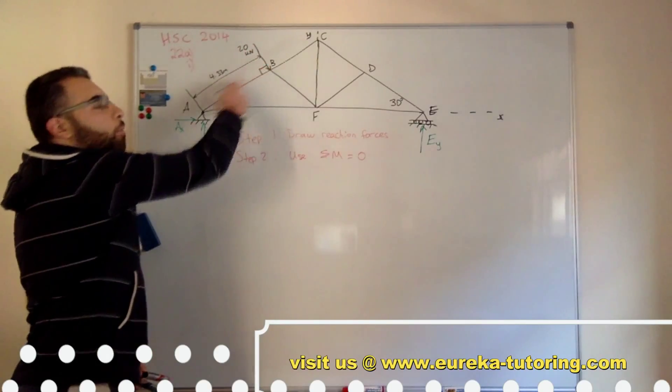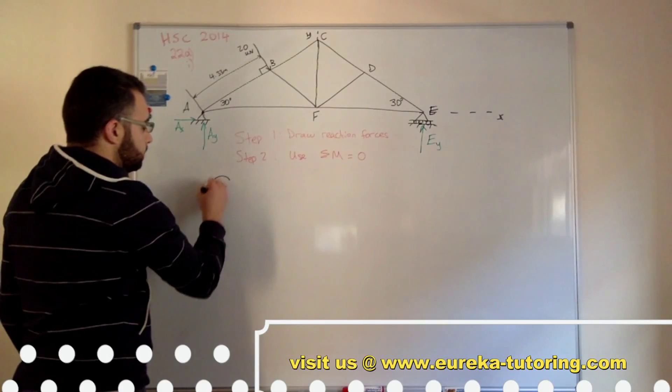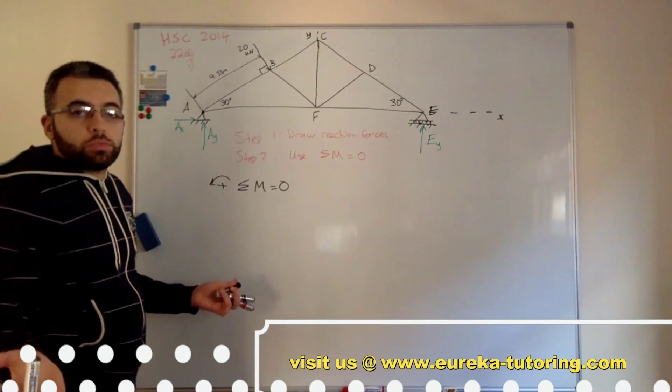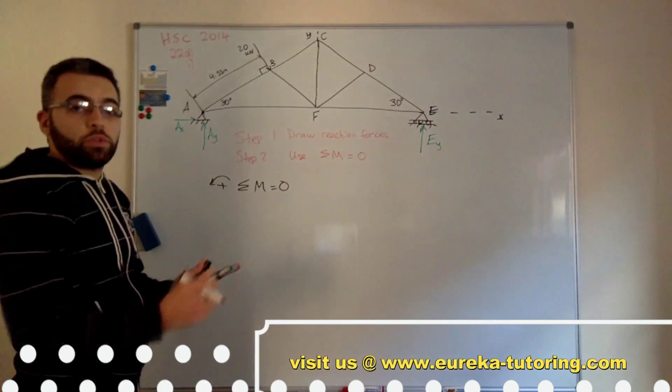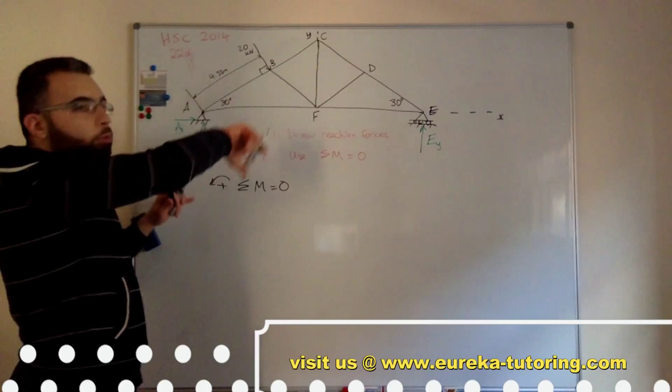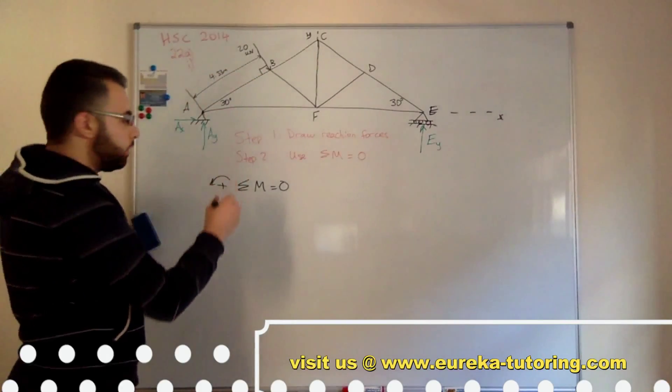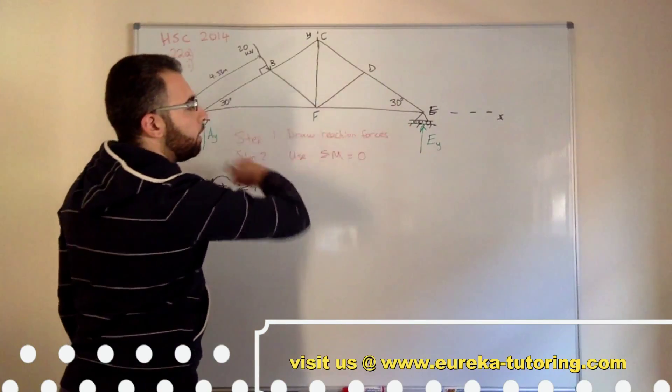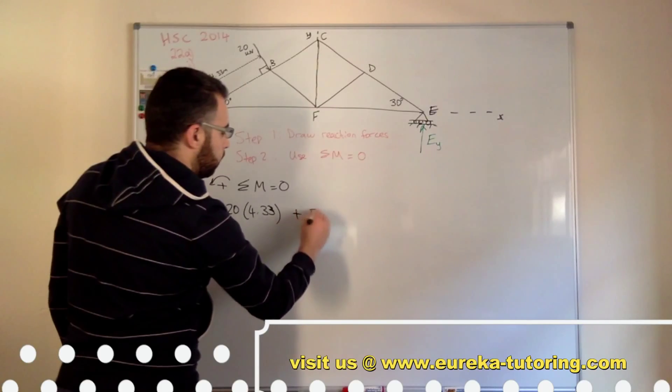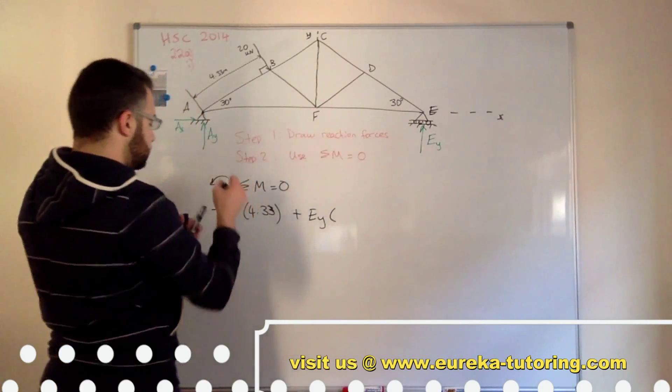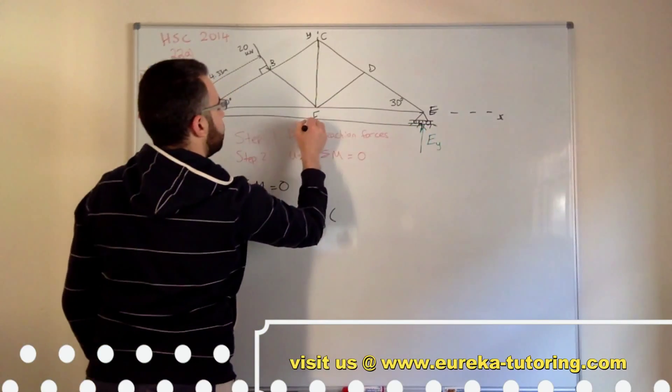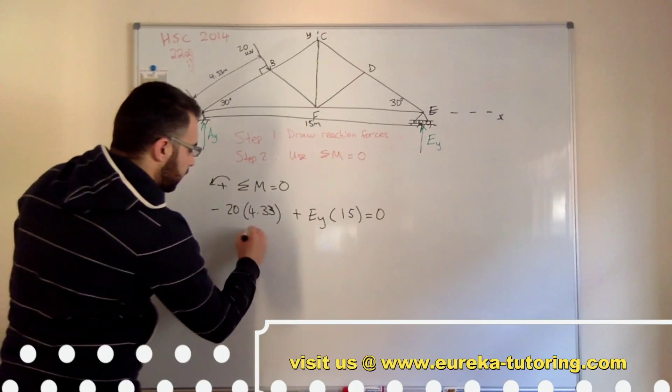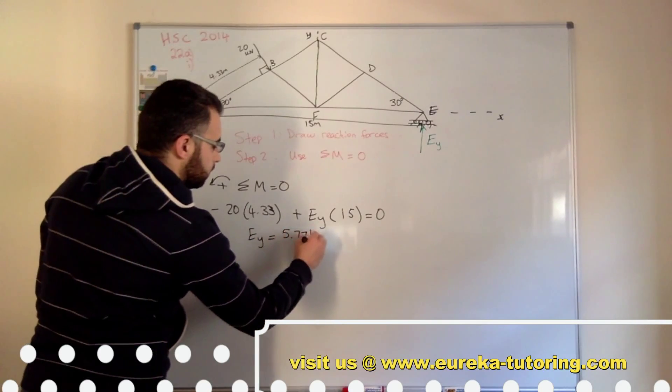So I know that this is the force, this is the perpendicular distance, so that will create a moment. Now I'm going to assume the moment to be positive in the anti-clockwise direction. It's up to what you assume it to be, it doesn't really matter, as long as you are consistent with your calculations. So this will create a moment about point A, going in the clockwise direction. So it will be negative 20 times 4.33. And E will create a moment anti-clockwise, so plus E times the perpendicular distance, which I forgot to place. And that is 15 meters. So E times 15 equals 0. Do the algebra and you get EY equals 5.77 kilonewtons.